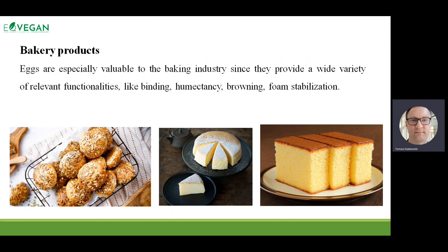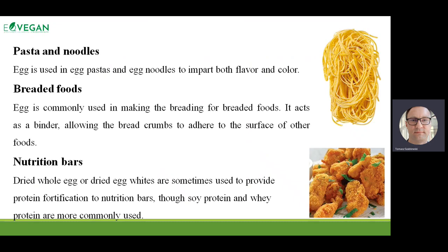On the right hand, we see sponge cake, and egg white is so important to produce the structure — to produce the foam, for foam stability, and also for color, flavor, and taste. It looks like eggs can't be replaced, but actually we can replace eggs to build that kind of product too. Eggs are also responsible for color and flavor in some pasta and noodle products.